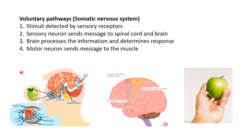Let's look at this pathway in a scenario. We see an apple — the image of the apple is detected by the sensory receptors in our eye. The sensory neuron, step two, then carries the message to our brain — specifically to the visual cortex, which is the part that decodes all the information the eyes send.